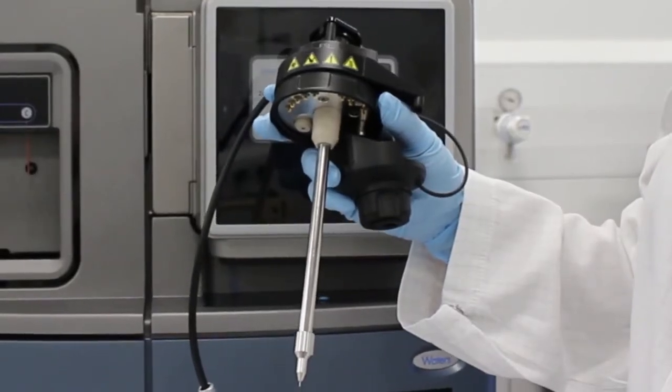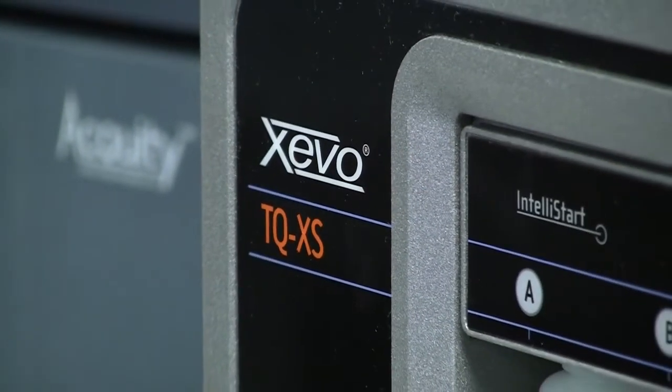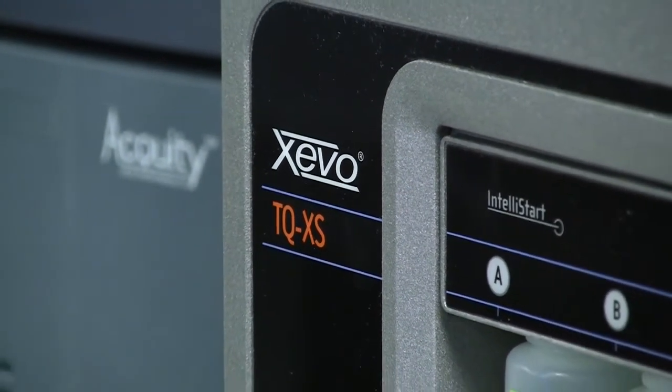This video shows the ESI variant being installed on the Zevo TQXS mass spectrometer.